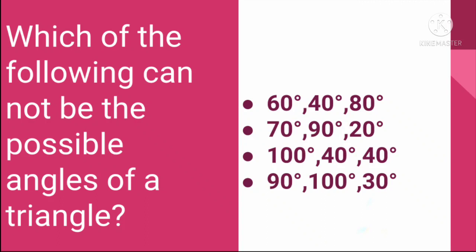Question number 2: Which of the following cannot be the possible angles of a triangle? Your options are: 60, 40, 80 degrees; 70, 90, 20 degrees; 100, 40, 40 degrees; or 90, 100, 30 degrees. From the given options, choose which set cannot be the possible angles of a triangle.